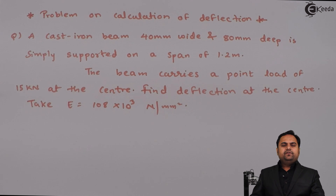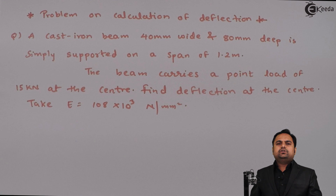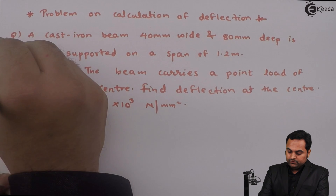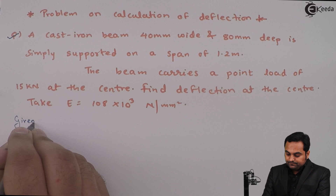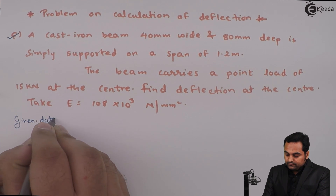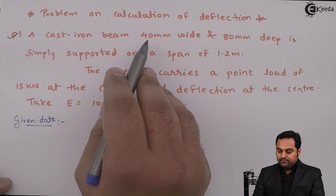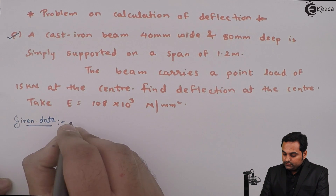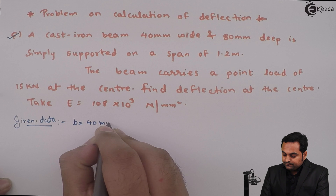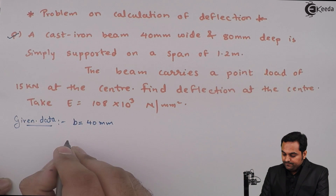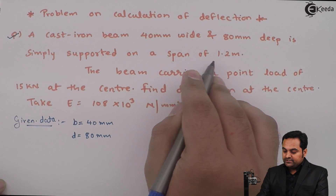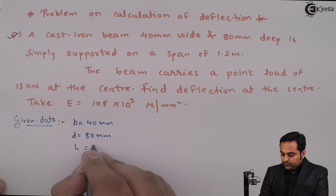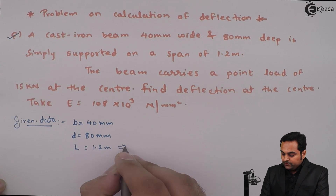Hello friends. In this video we will see a problem on calculation of deflection for a beam. From the problem data: it is given that a cast-iron beam is 40 mm wide, so width B is 40 mm, and 80 mm deep, so depth is 80 mm. It is simply supported on a span — that is, the length of the beam — which is 1.2 meters.